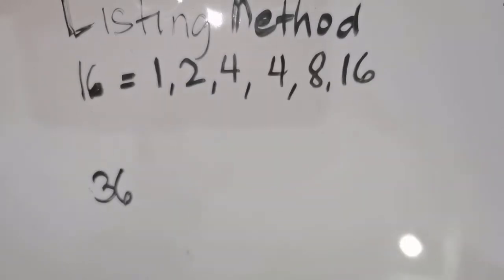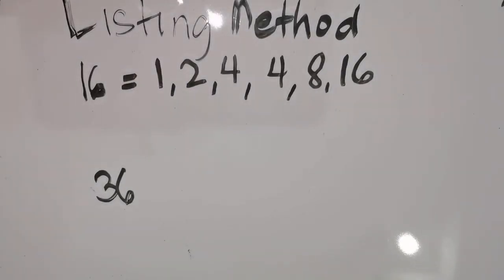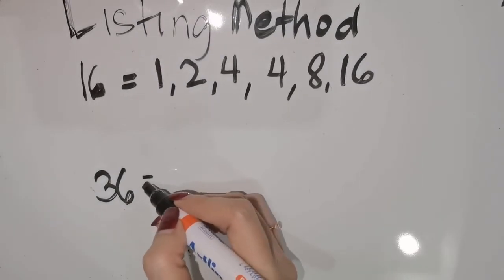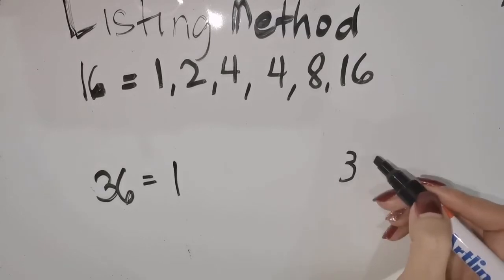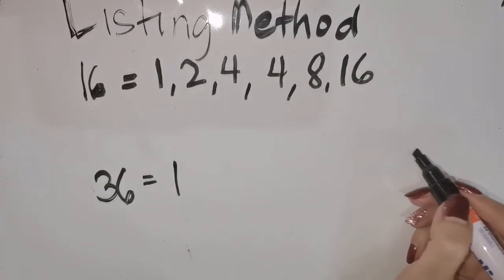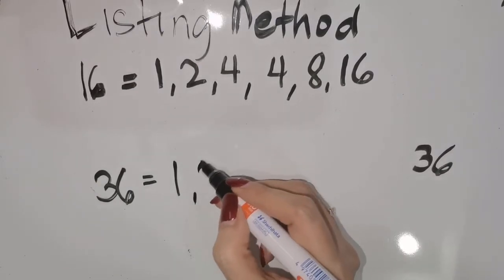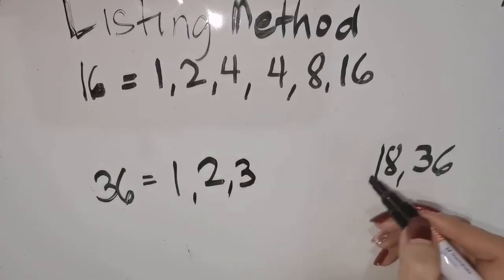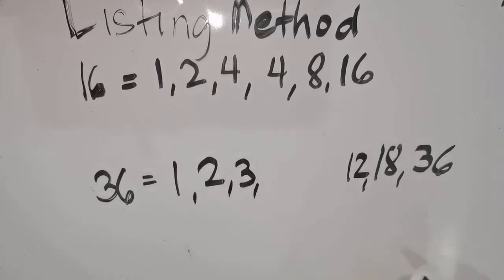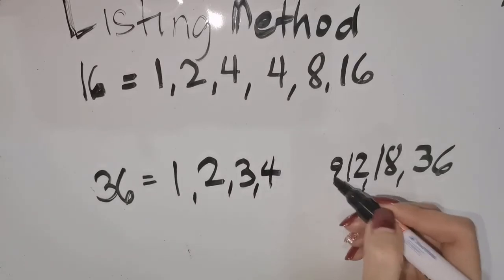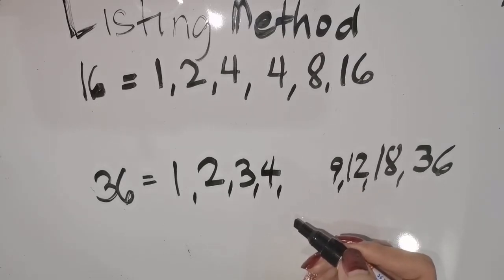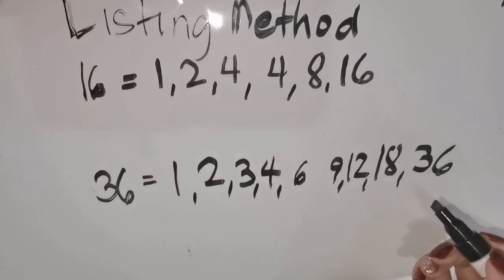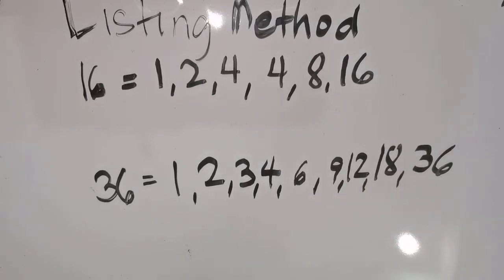Is 5 a factor? No. Is 6 a factor? No. 7? No, but 8 — we already have 8 here, so that's it for 16. For 36, the factors are: 1 times 36, 2 times 18, 3 times 12, 4 times 9. Is 5 a factor? No. Is 6 a factor? Yes — 6 times 6. How about 7? No. 8? No. So we go back to 9, which we already have. That's it for 36.